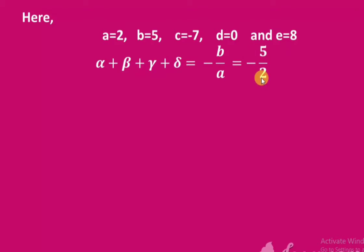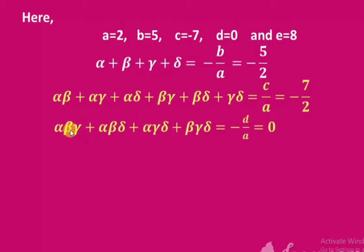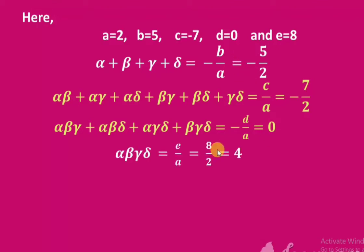The sum of the product of all roots taken two at a time: alpha·beta + alpha·gamma + alpha·delta + beta·gamma + beta·delta + gamma·delta = c/a = -7/2. The sum of products taken three at a time: alpha·beta·gamma + alpha·beta·delta + alpha·gamma·delta + beta·gamma·delta = -d/a = 0. The product of all roots: alpha·beta·gamma·delta = e/a = 8/2 = 4.